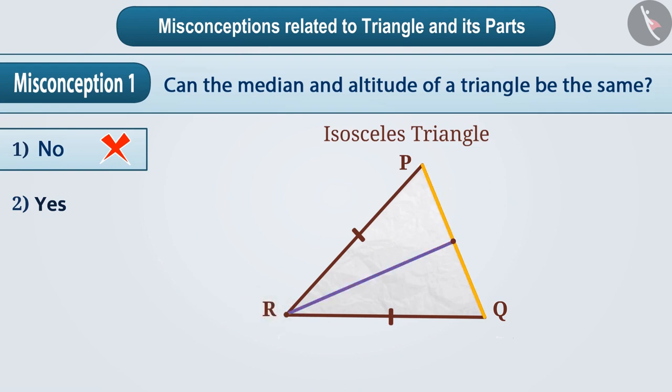The crease obtained is a line segment that divides the line PQ into two equal parts, so we can call it the median.